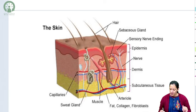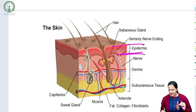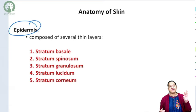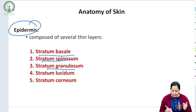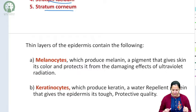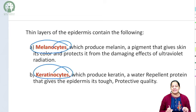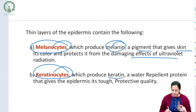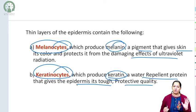In the skin there are three layers. The outermost is the epidermis, just below which is the dermis, and below the dermis is the subcutaneous tissue. In the epidermis there are five thin layers: stratum basale, stratum spinosum, stratum granulosum, stratum lucidum, and stratum corneum. In these five layers there are two types of cells — melanocytes and keratinocytes. Melanocytes secrete melanin, a pigment which gives color to the skin and protects it from the damaging effects of UV light. Keratinocytes produce keratin, a water-repellent protein that makes the epidermis tough and protective.